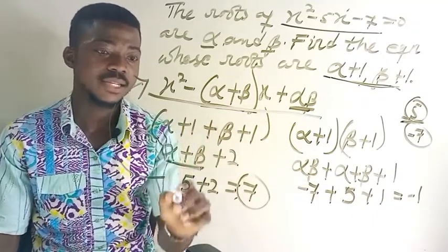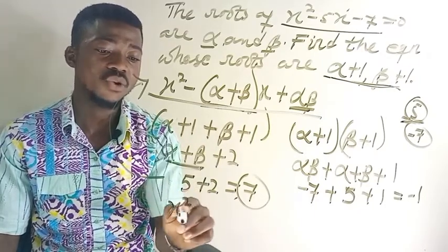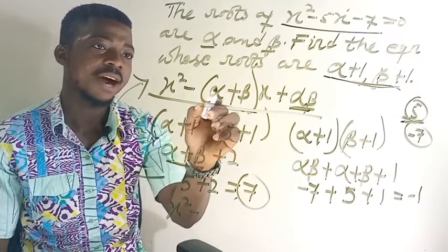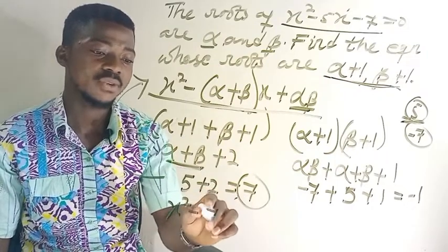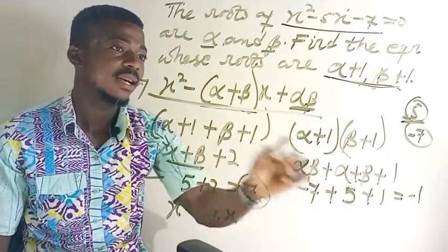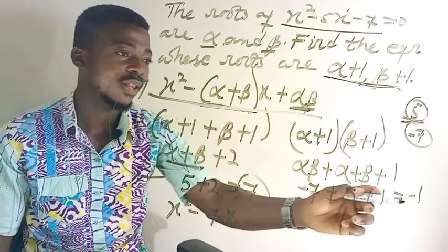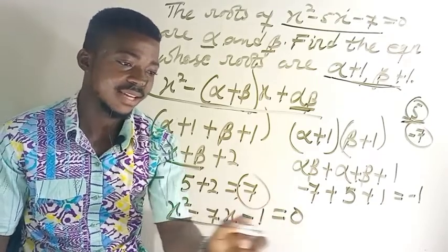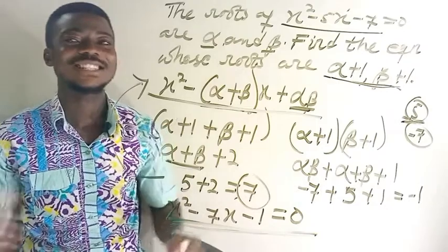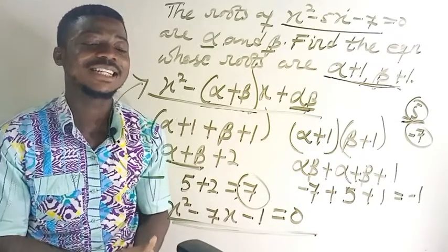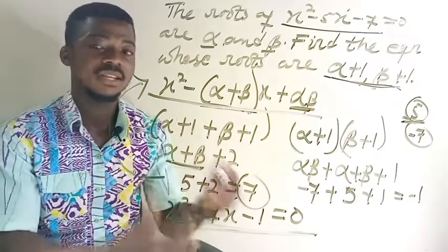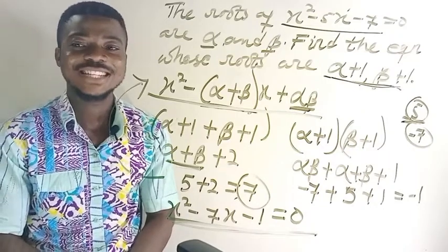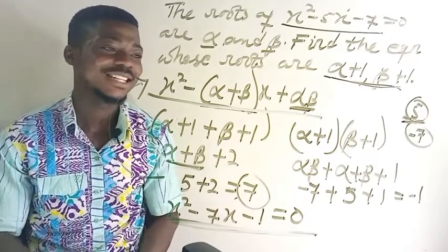Now we substitute into the control equation. The new equation is: x² − 7x + (−1) = 0, which gives us x² − 7x − 1 = 0. That is how you find the new equation whenever you are given an old equation and asked to find a new one given different roots.